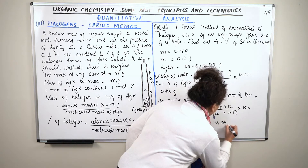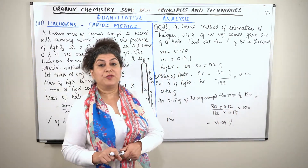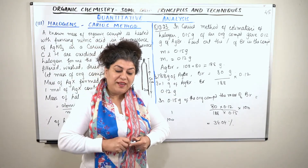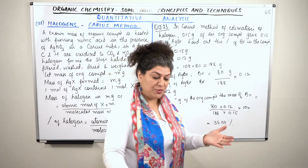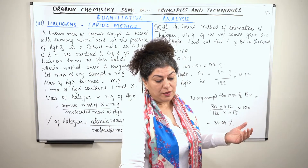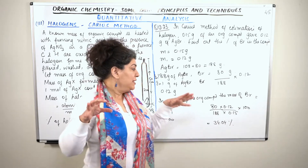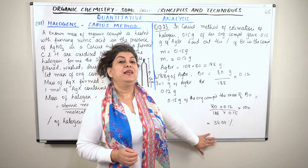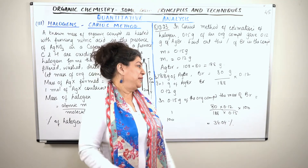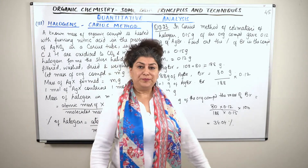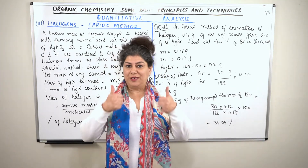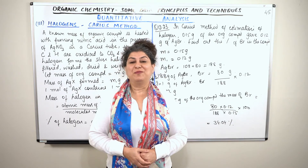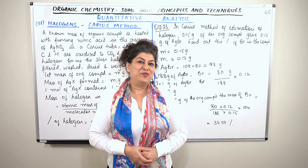So after having done the Dumas method, Kjeldahl's method, and the methods for carbon, hydrogen, and nitrogen, the same calculation approach makes the Carius method easy to understand. I'll wind up the video here. If you found it helpful, give it a thumbs up, subscribe to my channel, recommend it to your friends, and keep returning for more videos on chemistry. Thank you for watching — bye for now.